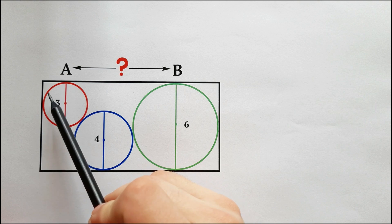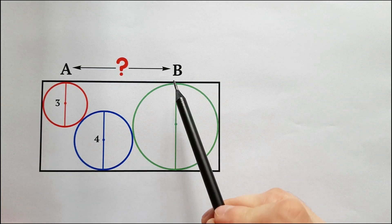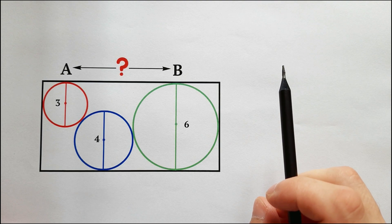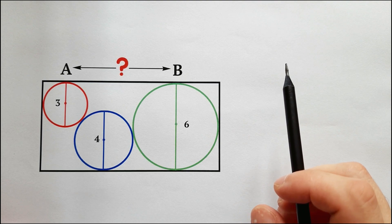We have a rectangle in which there are three tangent circles. The red circle touches two sides of the rectangle, whereas the green one touches three sides of the same rectangle.